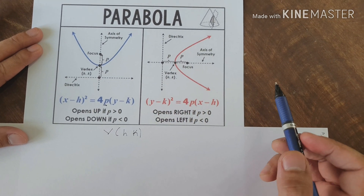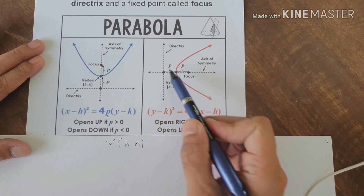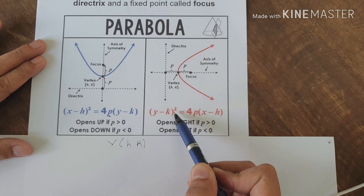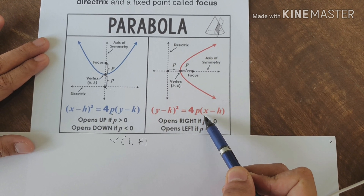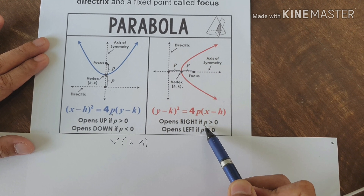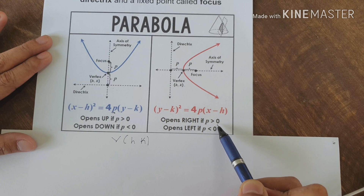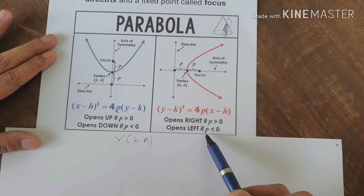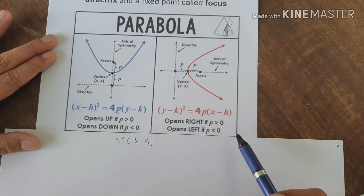On the other side, if the parabola opens to the right or to the left, we are using the formula (y minus k) squared equals 4p times the quantity (x minus h). If the parabola opens to the right, the value of p is greater than zero. If the parabola opens to the left, p is less than zero.